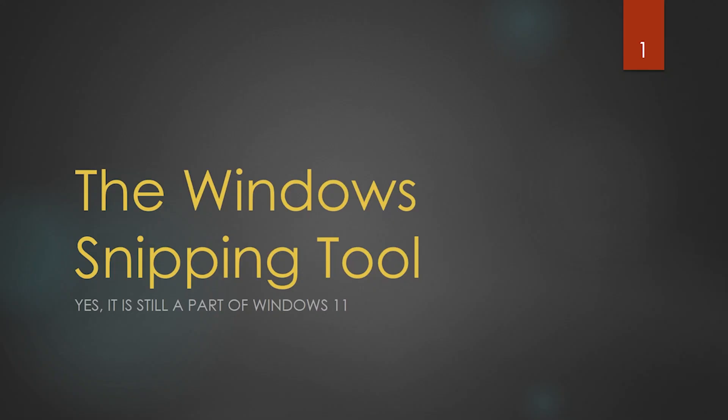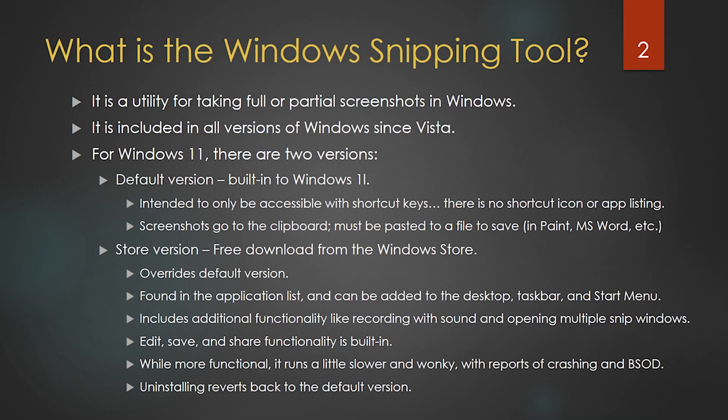Hello everyone, this is Tri from the Bloomingdale Public Library and today we're going to have a short discussion about the Windows Snipping Tool. So what is the Windows Snipping Tool? It is a utility for taking full or partial screenshots in Windows. This is included with all versions of Windows since Vista, however we're going to be focusing on Windows 11 today.